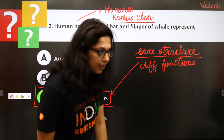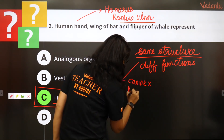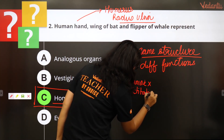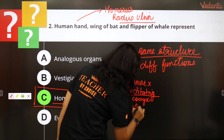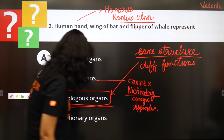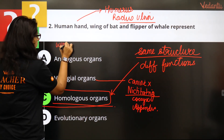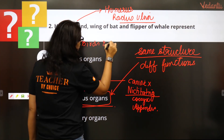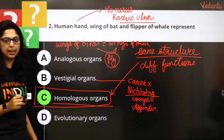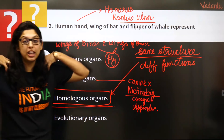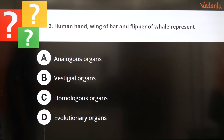Vestigial organs are those organs which no longer function in our body — for example, canine teeth, the third eyelid called the nictitating eyelid, the coccyx or tail bone (because we no longer need it for balance), and the appendix. These are all vestigial organs. Analogous organs have the same function but different structure — for example, wings of birds and wings of insects. Both help in flight, so the function is the same, but one uses the pectoral girdle and the other is an appendage.